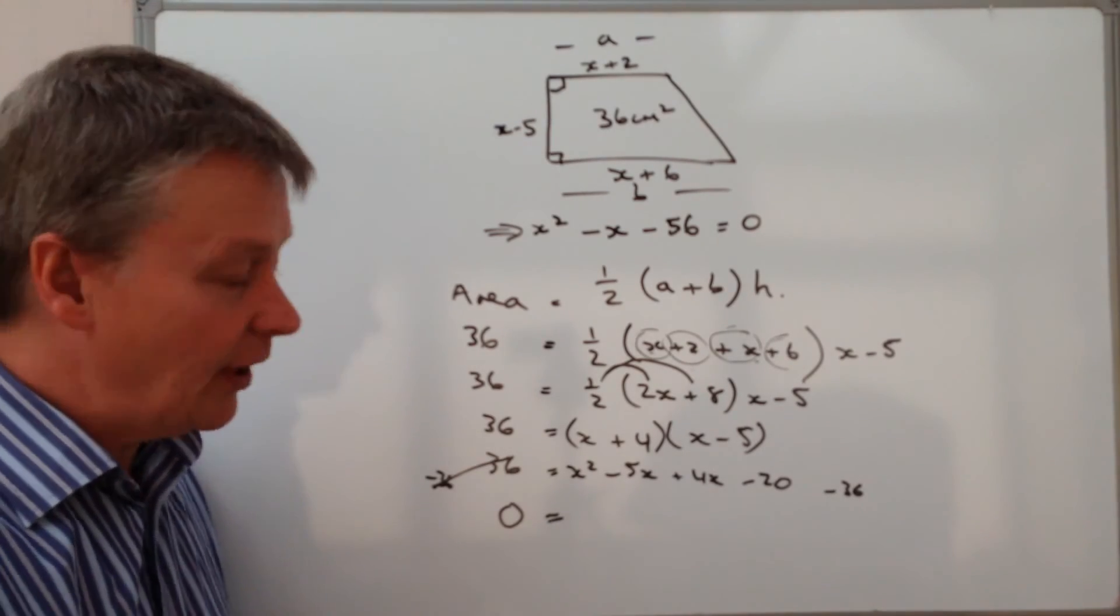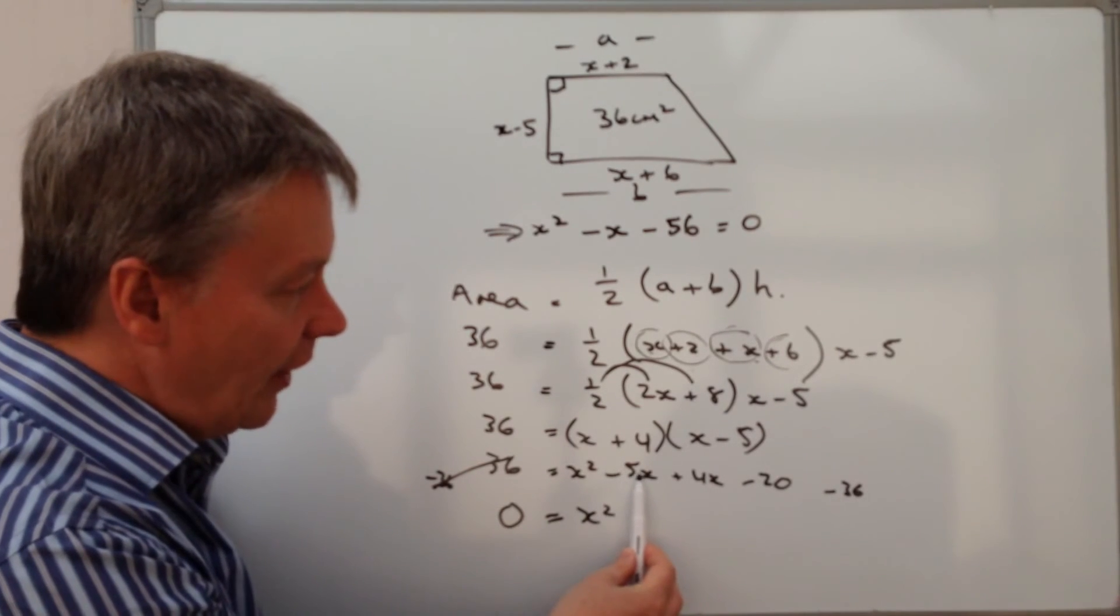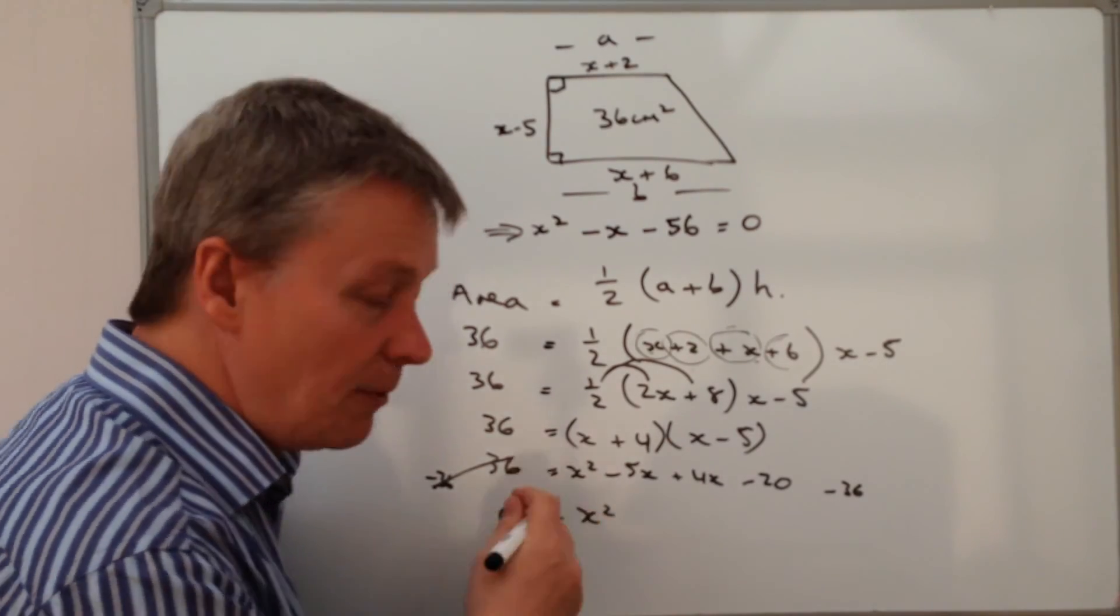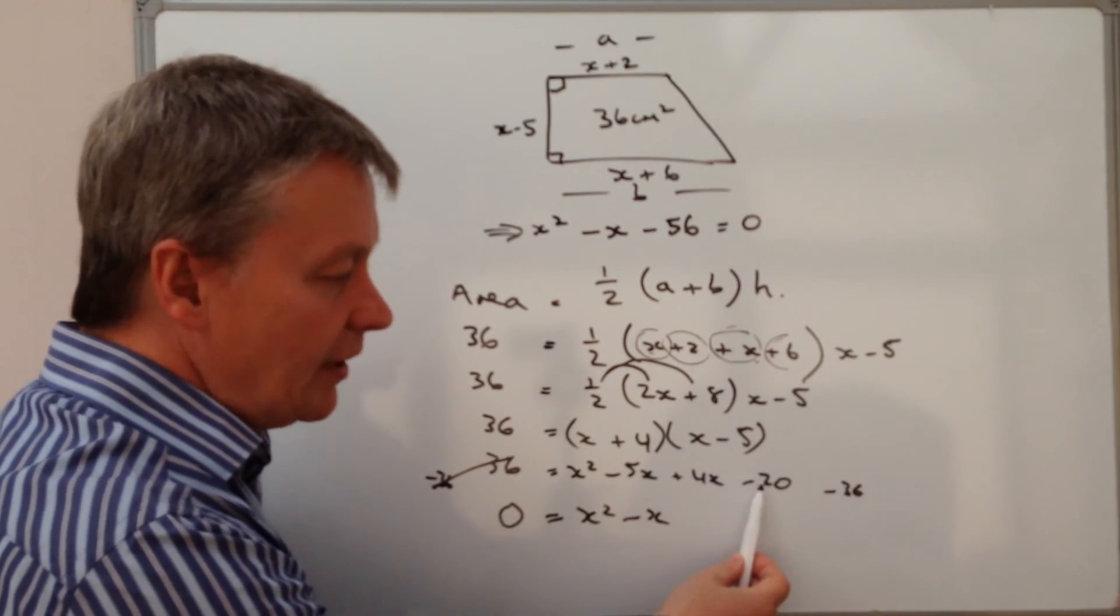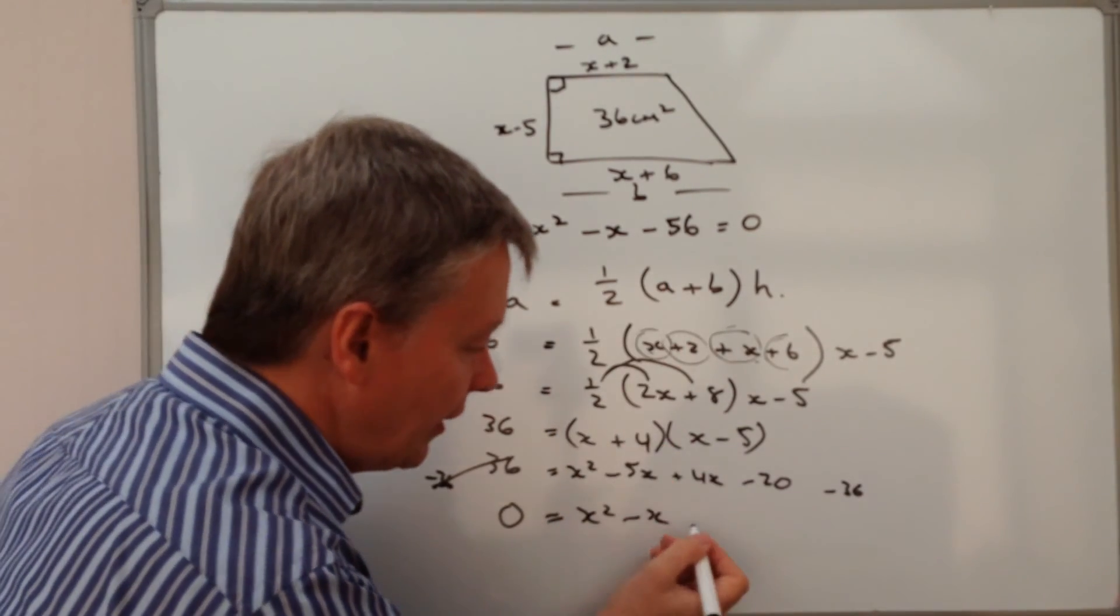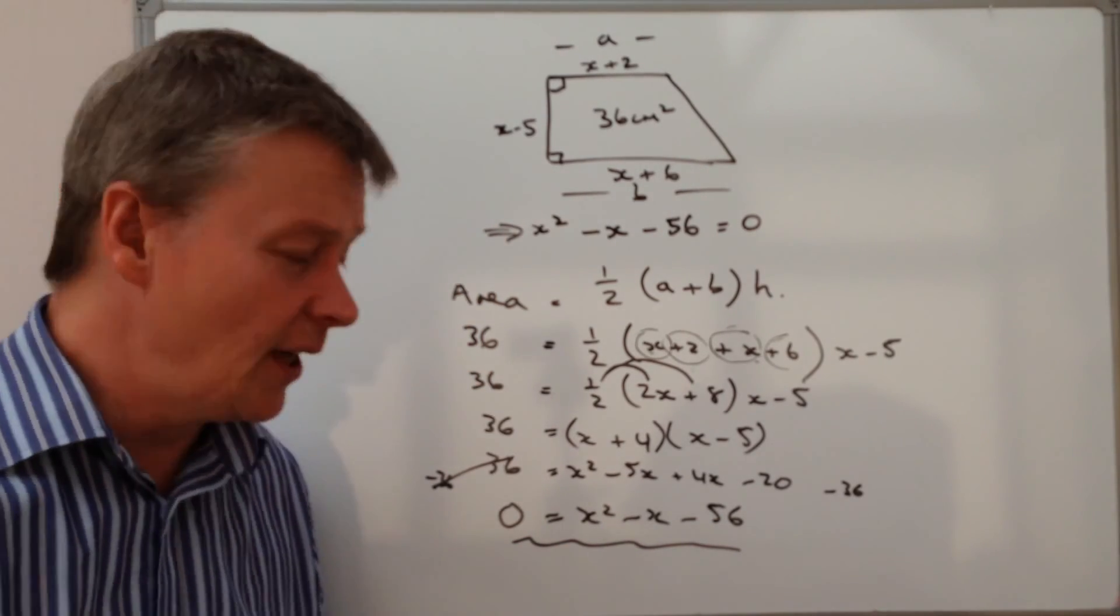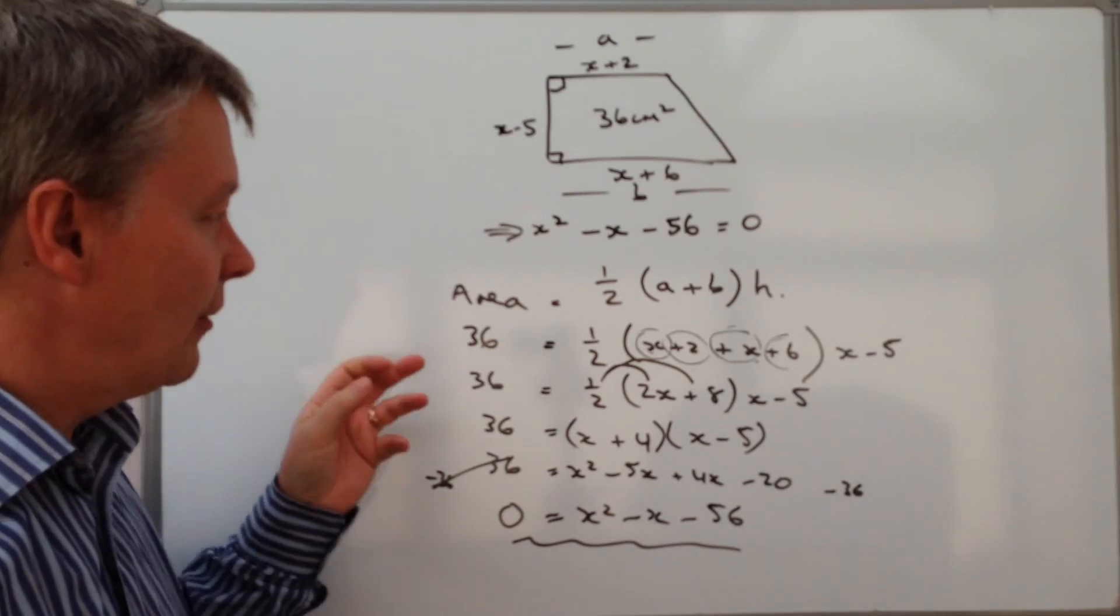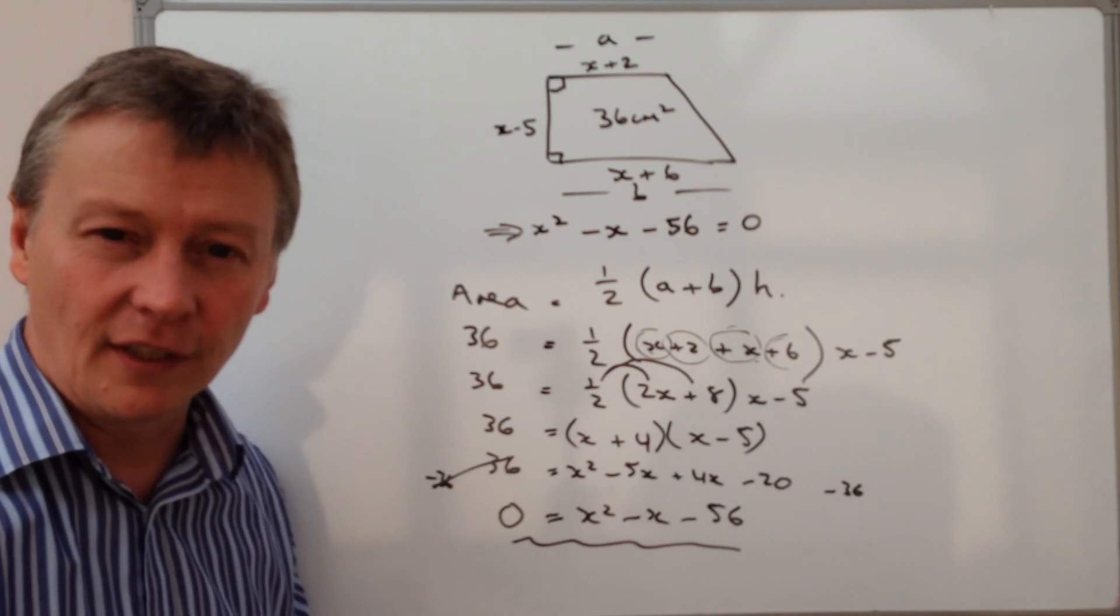Let's tidy this up a little bit now. I've got x squared, can't do anything about that because it's a term all on its own. I've got minus 5x plus 4x, well minus 5 plus 4 is going to give me minus 1 or minus x. Then I've got minus 20 minus 36, well guess what, that's going to be minus 56. So what I've done is proven by using the formula for the area of a trapezium that this is absolutely true for this particular dimensions of this particular trapezium.